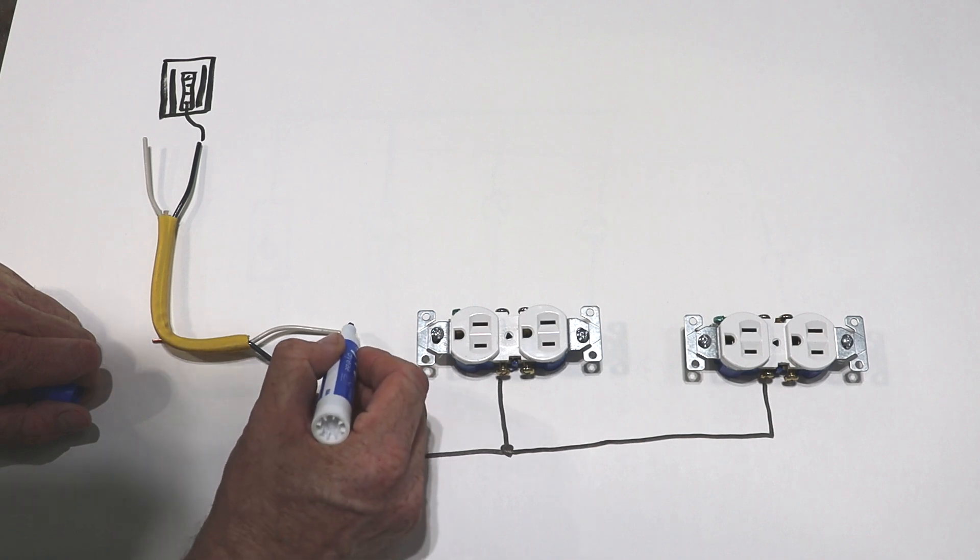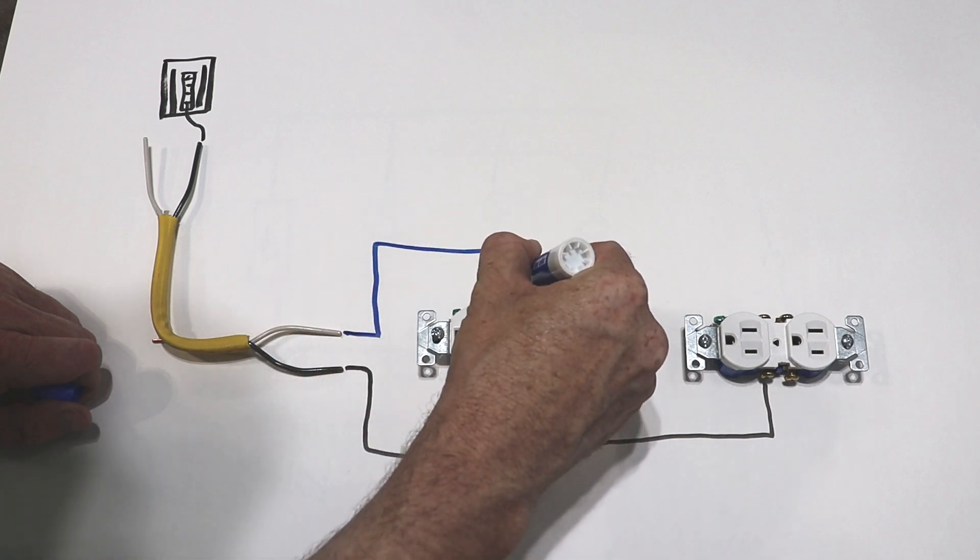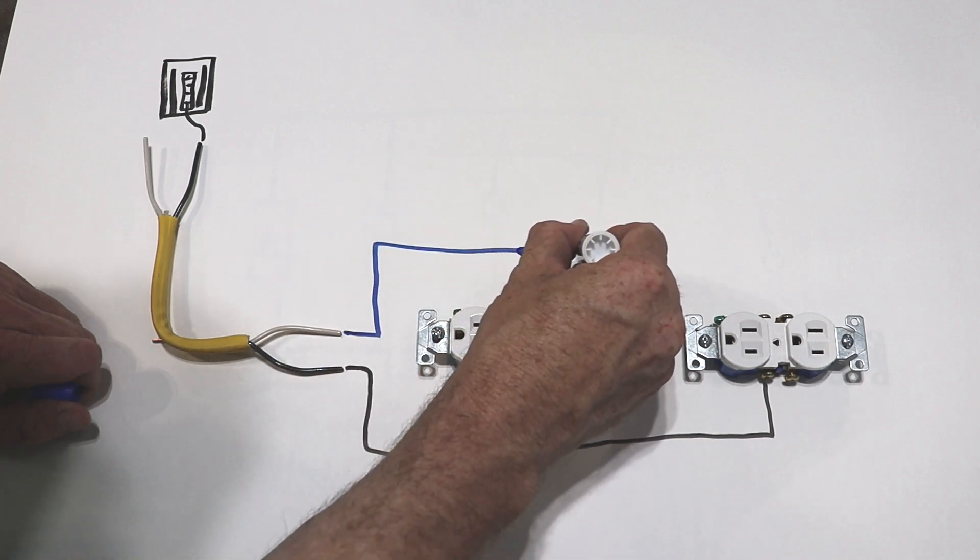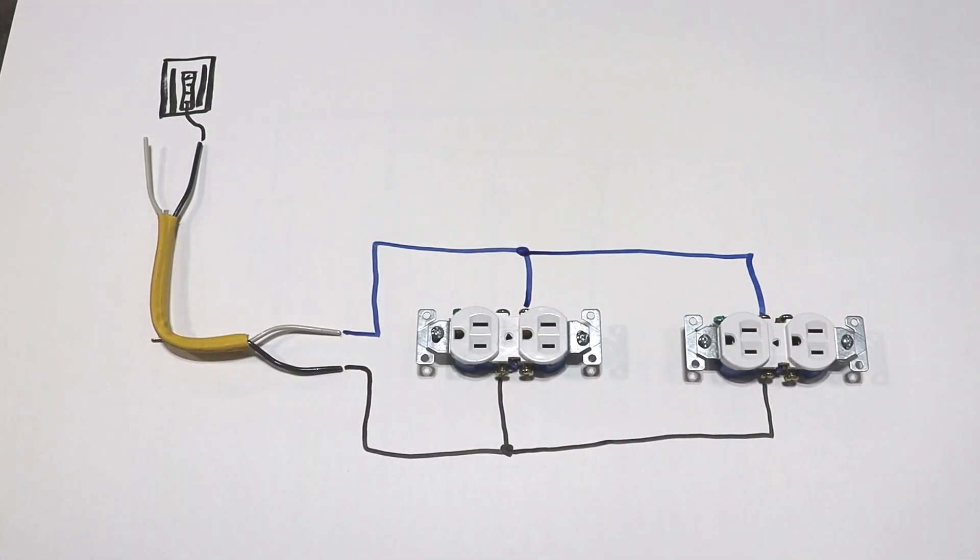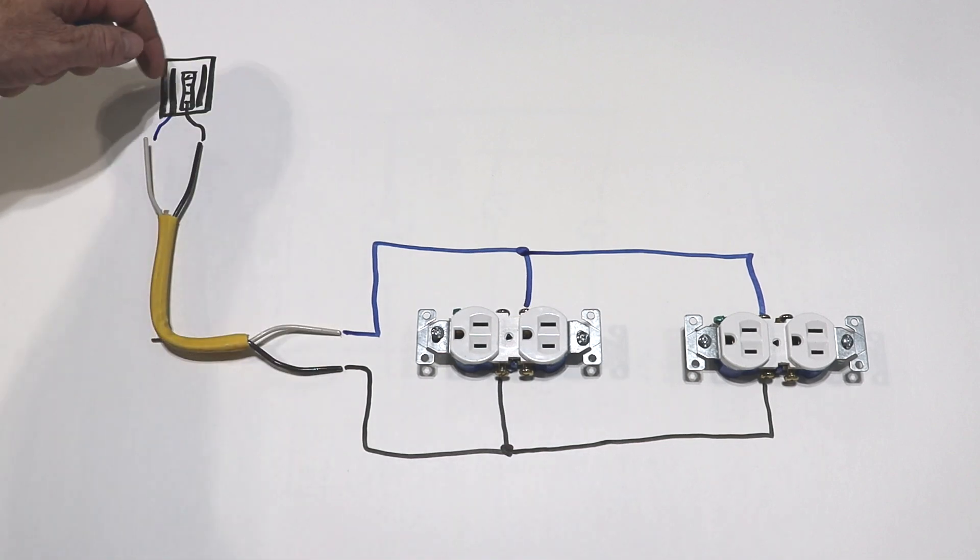Now let's do the same thing with our neutral wire. So we have our pigtail that comes up, gets wire nutted up, and then the wire continues on to the next outlet. And I also forgot I need to hook the neutral wire up to the bus bar in the panel box.